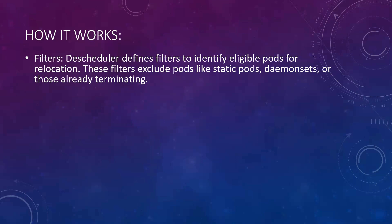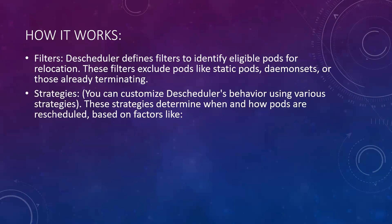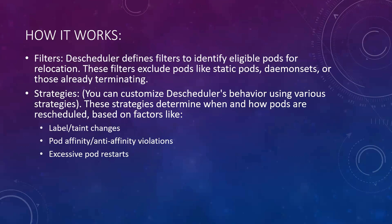Once the filter identifies eligible pods, it defines strategies — determining when and how a pod should be rescheduled. This is not straightforward; it considers many factors: label and taint changes, pod affinity and anti-affinity violations, excessive pod restarts — for example, if a pod restarts more than a defined threshold like five times, reschedule it to a different node — and node utilization levels, both under-utilized and over-utilized cases.